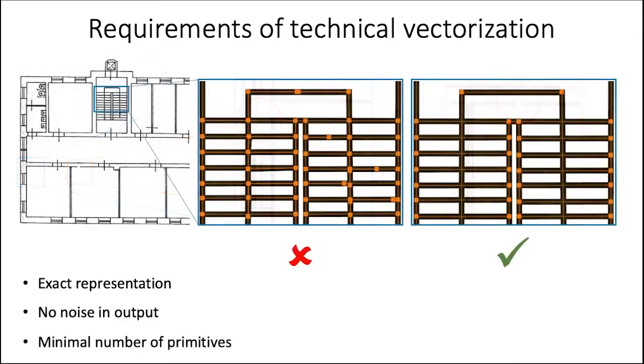The number of primitives in the vector representation has to be minimal, resulting in a compact and easily editable representation. The first and last requirements are conflicting, since reducing the number of primitives ultimately leads to the reduction of the level of detail. As for the second requirement, it is often unclear how to formalize what is an artifact.